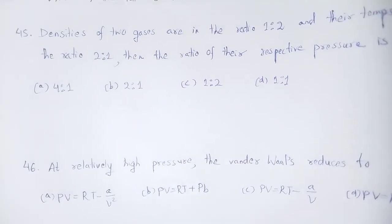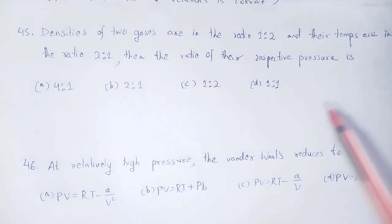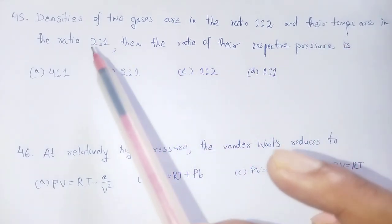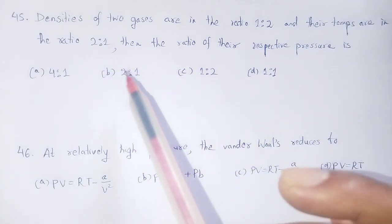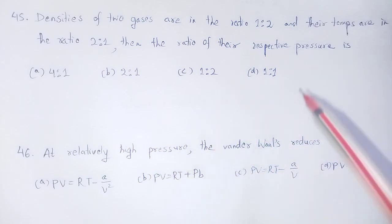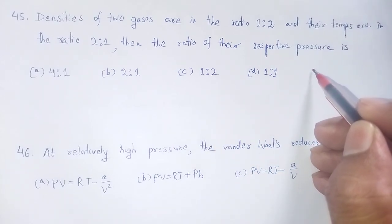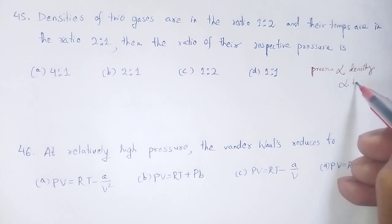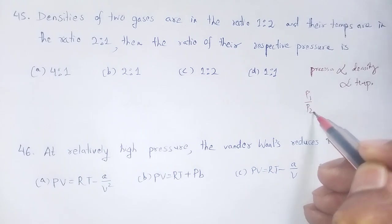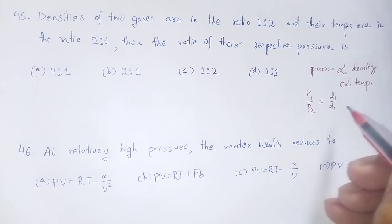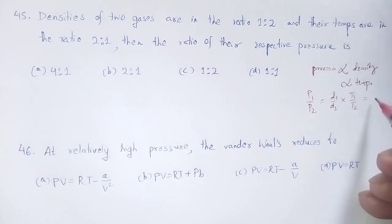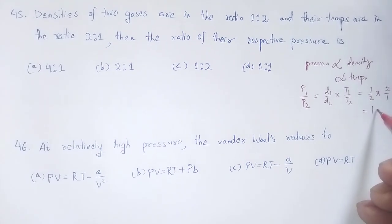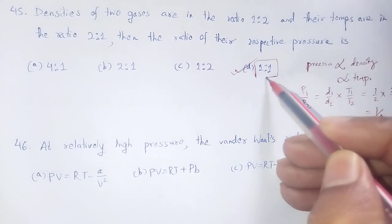Question 45: Densities of two gases are in the ratio 1:2 and their temperatures are in the ratio 2:1. Find the ratio of their respective pressures. Since pressure is directly proportional to density and temperature: P1/P2 equals (D1/D2) times (T1/T2) equals (1/2) times (2/1) equals 1. So the pressure ratio is 1:1. Option number D is correct.